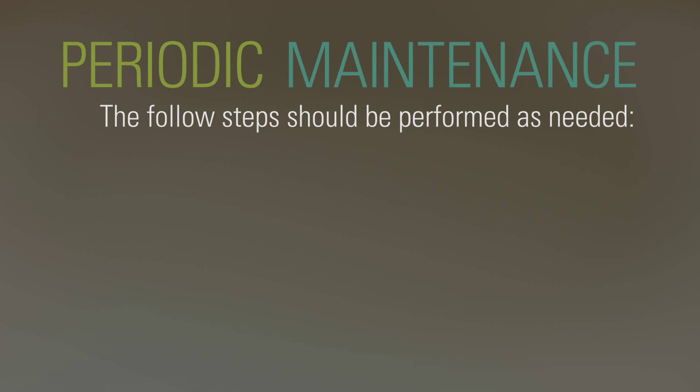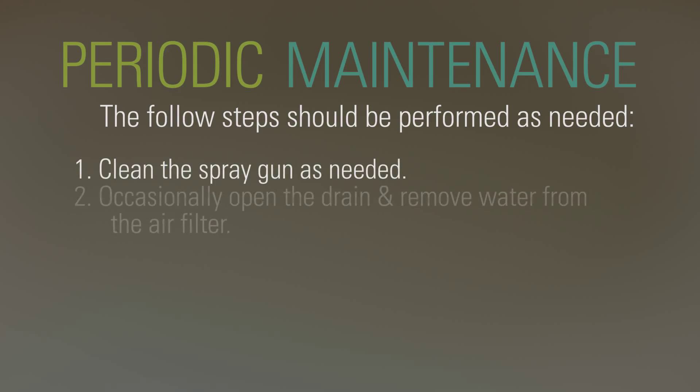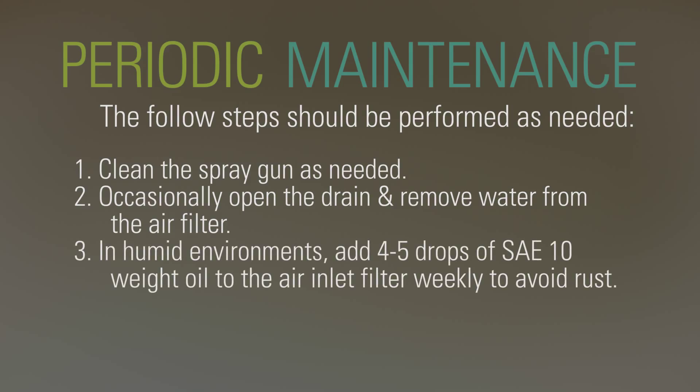The following steps should be performed as needed. Clean the spray gun as needed. Occasionally, open the drain and remove water from the air filter. In humid environments, add 4 to 5 drops of SAE 10-weight oil to the air inlet filter weekly to avoid rust.